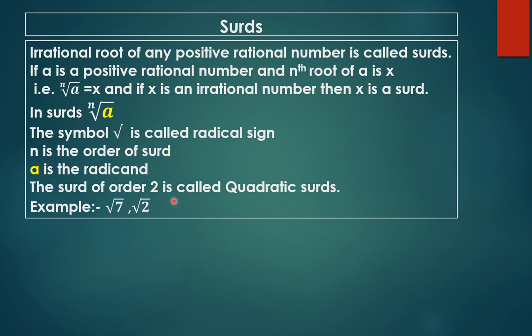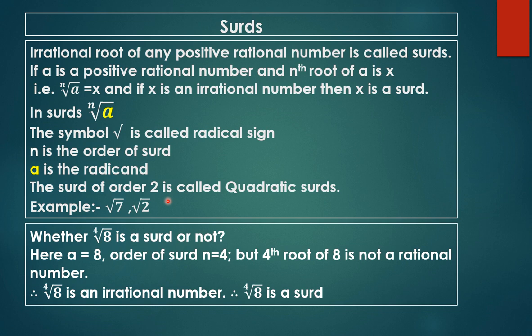A surd is an irrational root of a positive rational number. Let's find out whether a given number is a surd or not. Example: is the fourth root of 8 a surd? Here the radicand a is 8 and the order n is 4. If you do the factorization of 8, you get 2 × 2 × 2, so the fourth root of 8 is not a rational number — it is an irrational number. Therefore, the fourth root of 8 is a surd.